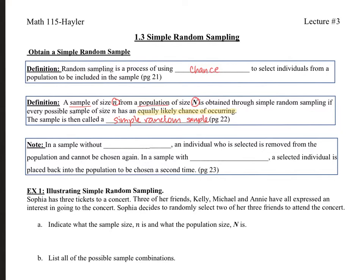Let me read this definition again. A sample of size n from a population of size N is obtained through simple random sampling if every possible sample of size n has an equally likely chance of occurring. So that's a big point. They need to have an equally likely chance of occurring. The sample is then called a simple random sample. Note. One thing to note here. In a sample without replacement, what do I mean here? Well, for example, if you had let's say a jar of candies, and every time you took out a candy, you ate it. That would mean there would be one less candy every time you ate one. And you took it out. And you ate it. That's talking about without replacement.